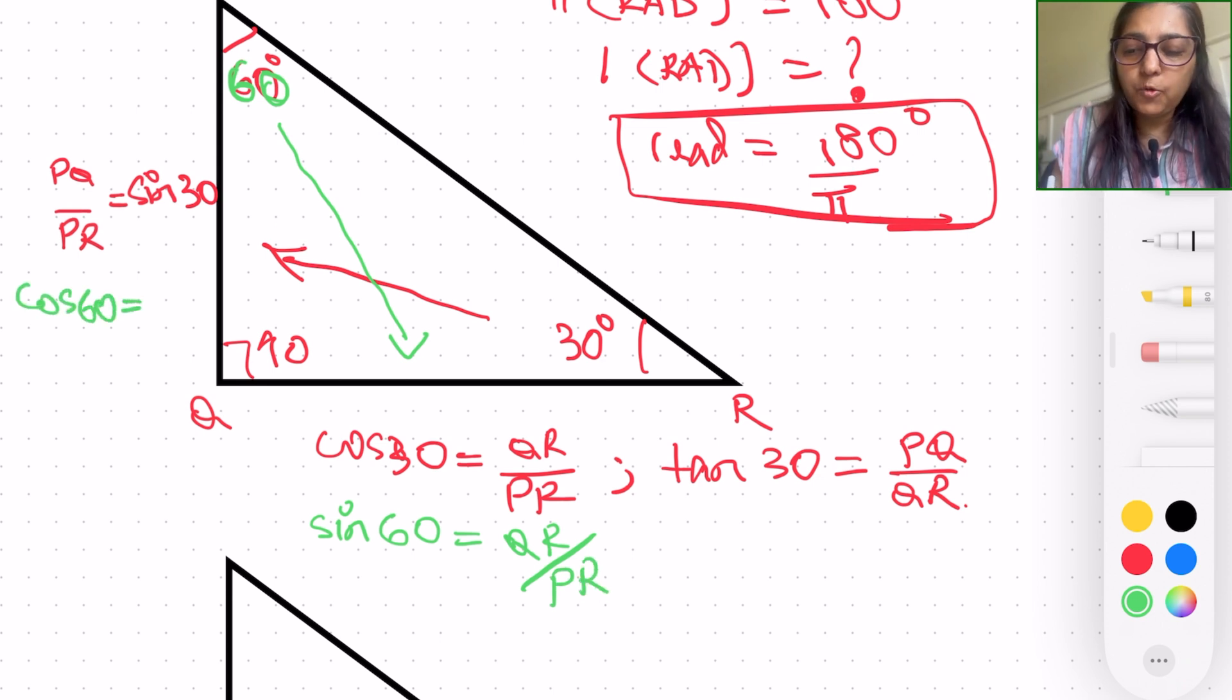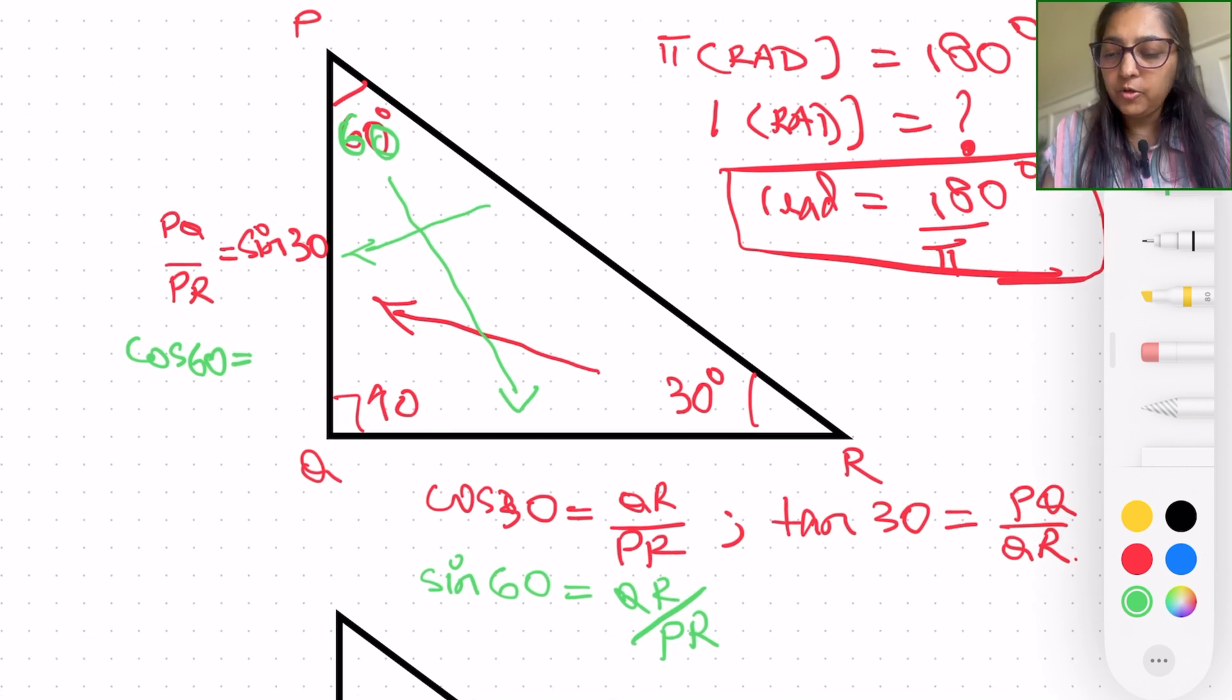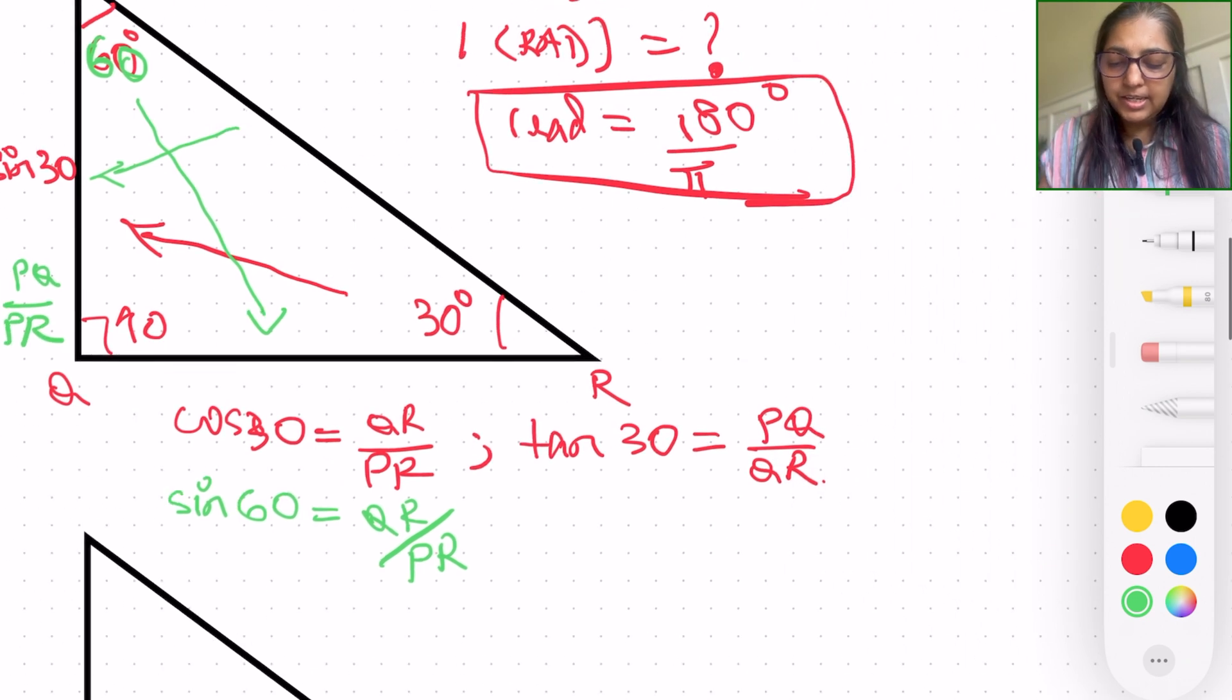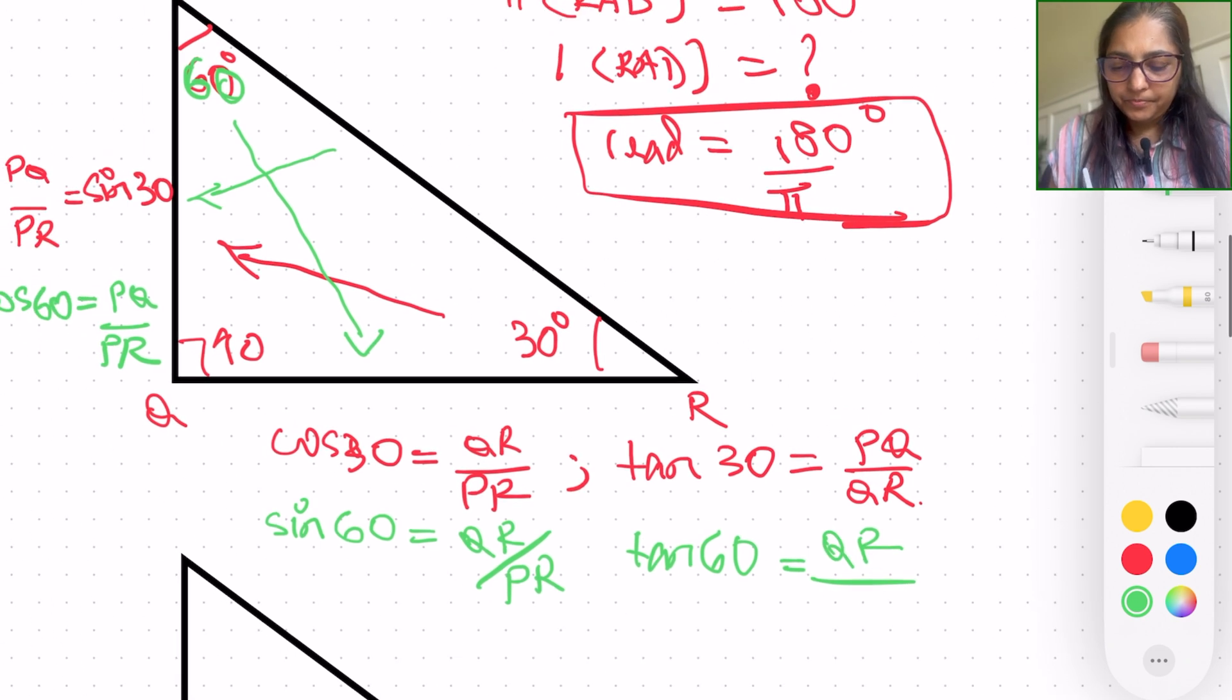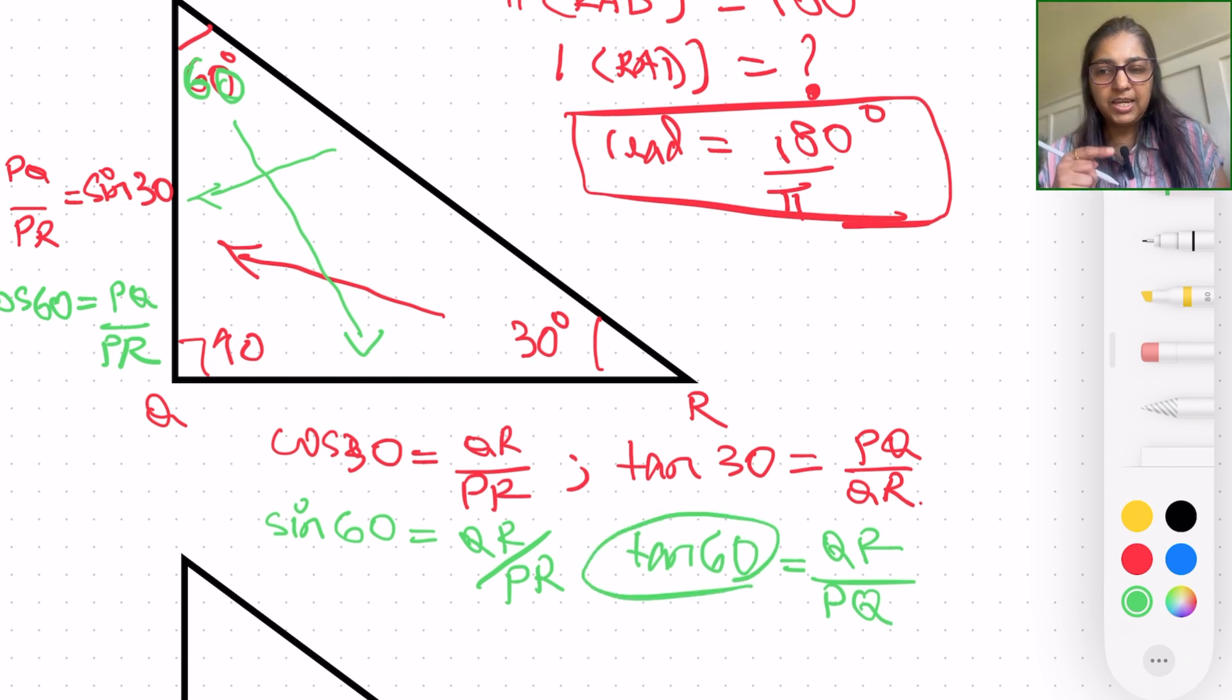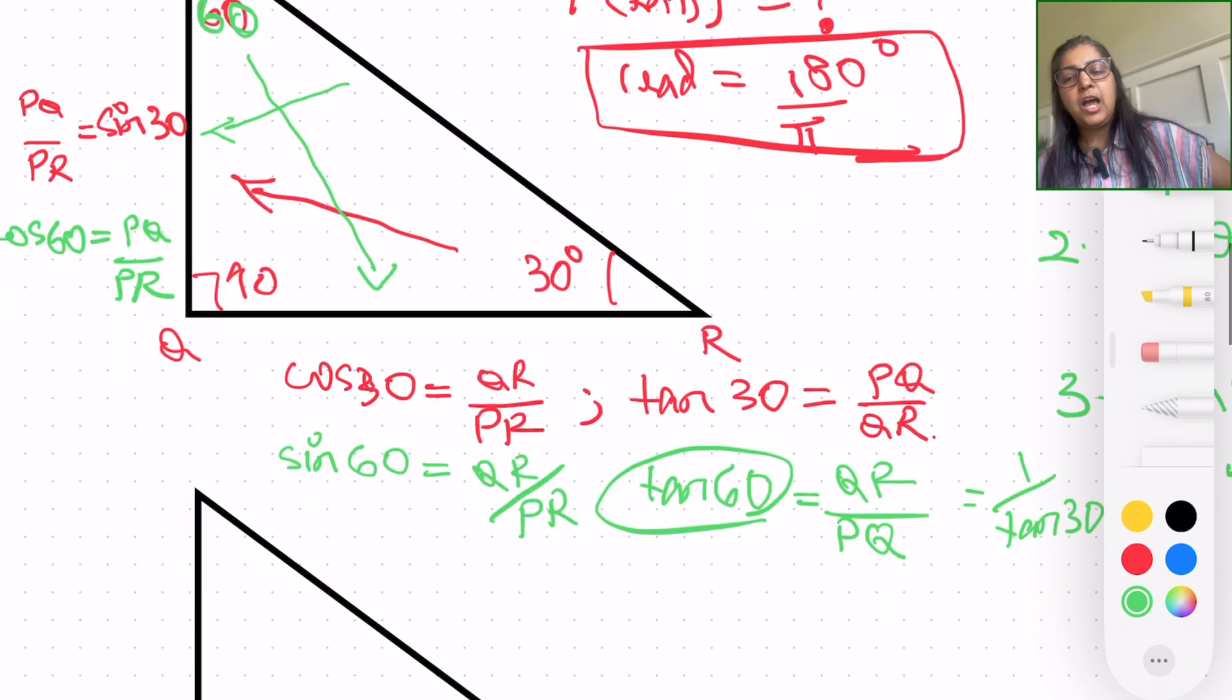And the tangent of 60: here the opposite side is going to be QR and adjacent is going to be PQ. So if you will observe, tangent of 60 is equal to 1 over tangent of 30.